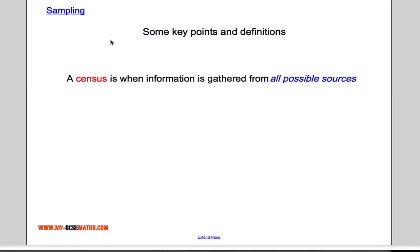A census is when information is gathered from all possible sources. In the UK, the census is done every five years — a document gets sent around to every household and you have to fill in lots of information about your family and the people living in your home. It gives the government a good idea of where the country is at and what they need to do with regard to healthcare, education, and things like that. So the census gathers data from all possible sources.